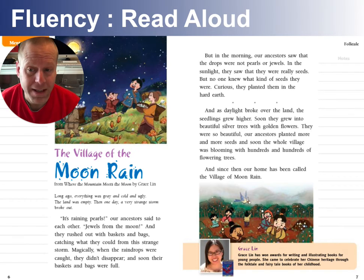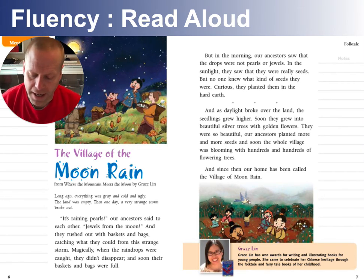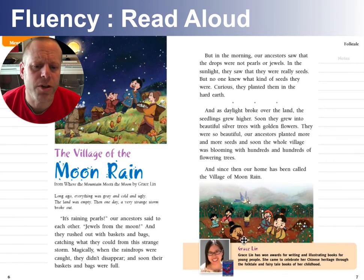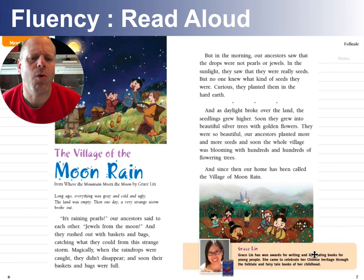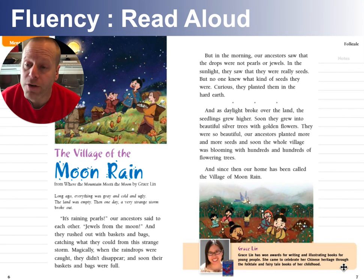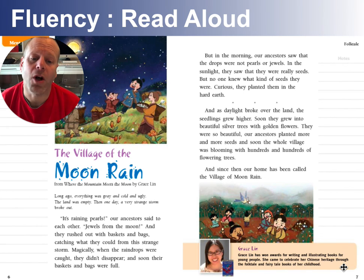Curious, the people planted them in the hard earth. As the daylight broke over the land, the seedlings started to grow higher, and soon they grew into these beautiful silver trees. And each tree had golden flowers. They were so beautiful that our ancestors planted more and more of these seeds, and soon the whole village was blooming with hundreds and hundreds of flowering trees. And since then, our home has been called the Village of the Moon Rain.